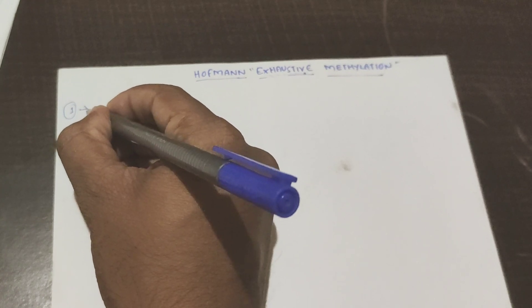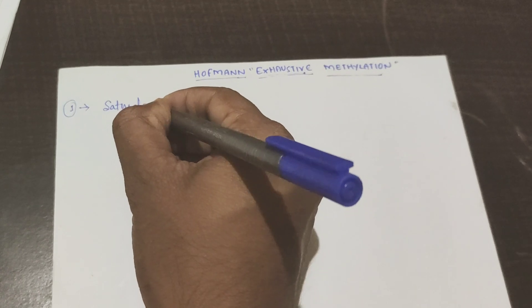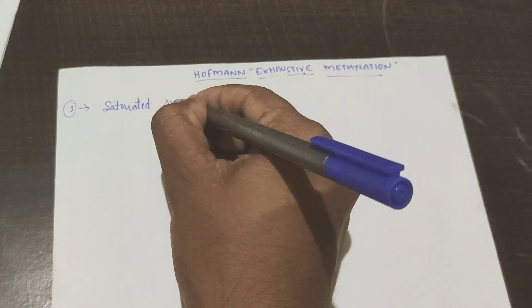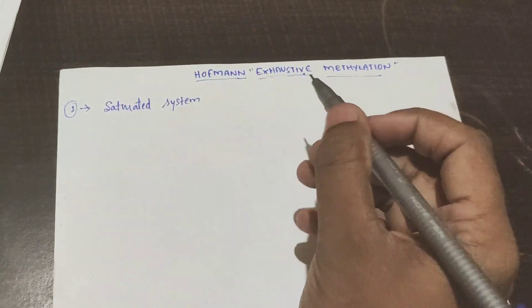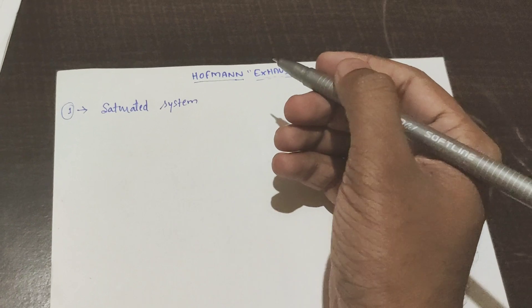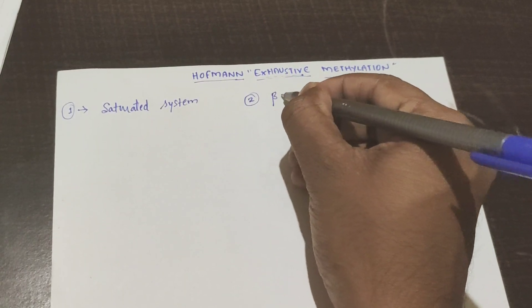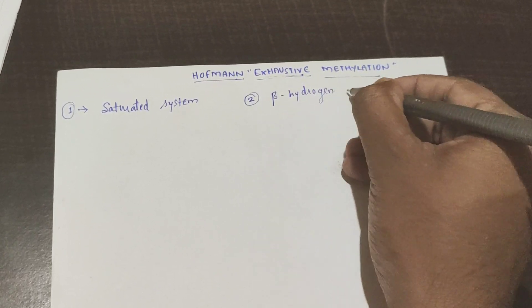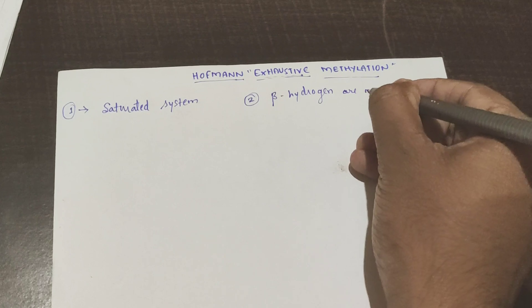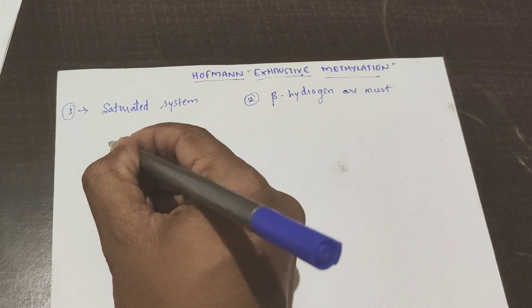Remember two things: first, when Hofmann Exhaustive Methylation is done, one condition is that the system must be a saturated system — that means it should not have any double bonds; absence of unsaturation must be there. Second, beta hydrogens must be present in the molecule. Beta hydrogens are a must in the structure.